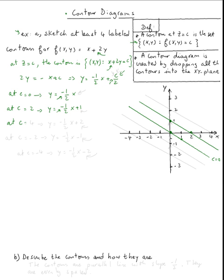Now c equal four, I'm using multiples of two. At c equal four, y will be negative one half x plus two. Again, y intercept is two, x intercept will be four, so that would be this line.